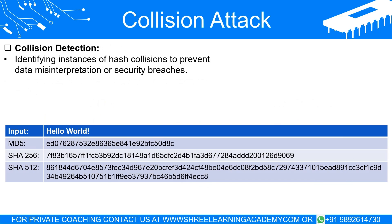Collision detection and its importance. Detecting collisions is a crucial part of maintaining the security and integrity of data. When the same hash value is generated from different data sets, it's a clear indicator of a collision. Collision detection is an essential part of identifying these incidents to prevent potential data misinterpretation or security vulnerabilities. If a collision is detected, typically those data sets should be discarded or reprocessed with a more robust hash function to generate unique hash values.